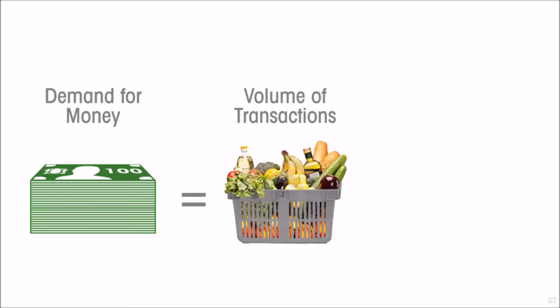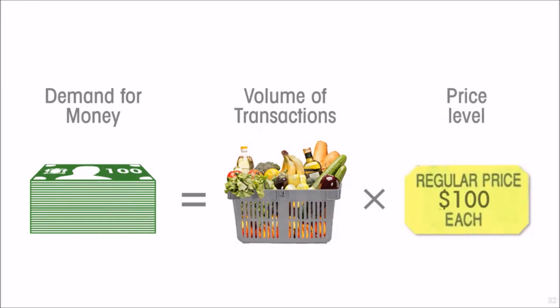Most of the reason for holding money is tied to spending — to having the ability to engage in transactions, to buy goods and services. It follows that the determinant of your demand for money is going to be the amount you need to spend. The volume of transactions is one factor: how many meals you have to buy, how much transportation, how much phone credit — the volume of your daily consumption determines your demand for money. Of course, the price of goods and services matters too; the product of volume and price tells you how much money you need.